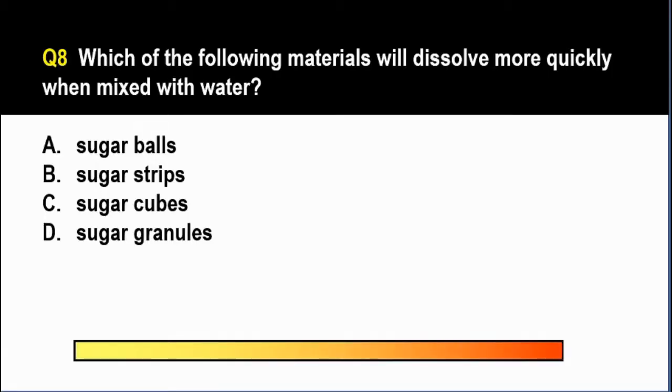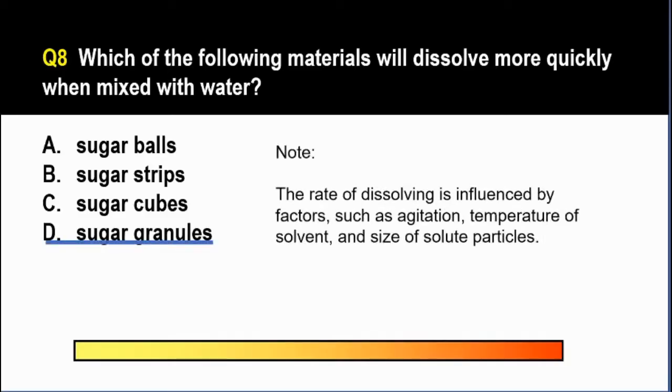And the correct answer is letter D. Because among the 4, it is in D that you have the smallest solute particles. One factor that affects the rate of dissolving is the size of the solute particles. Kasi mas malaki yung surface area that comes in contact with the solvent. So mas marami ang solute and solvent na nag-interact kasi mas maliit yung solute particles. Letter D, sugar granules will dissolve the fastest.